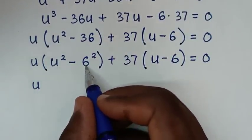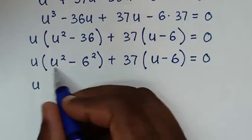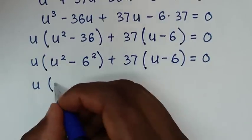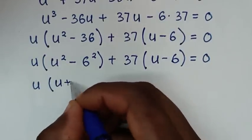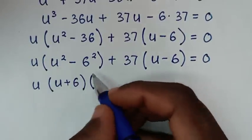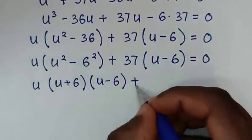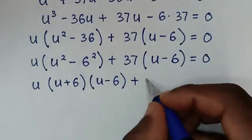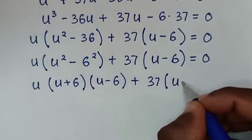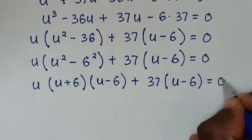Now u² minus 36 is the same as u² minus 6², which is in the form of a difference of squares. So it becomes (u plus 6)(u minus 6). Then plus 37(u minus 6) equals 0.